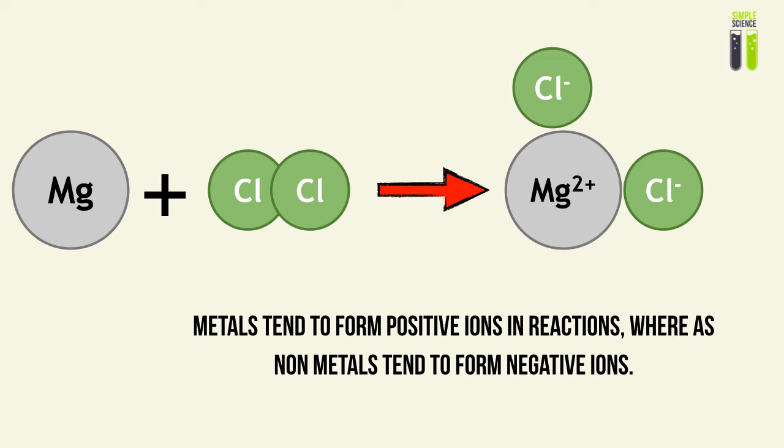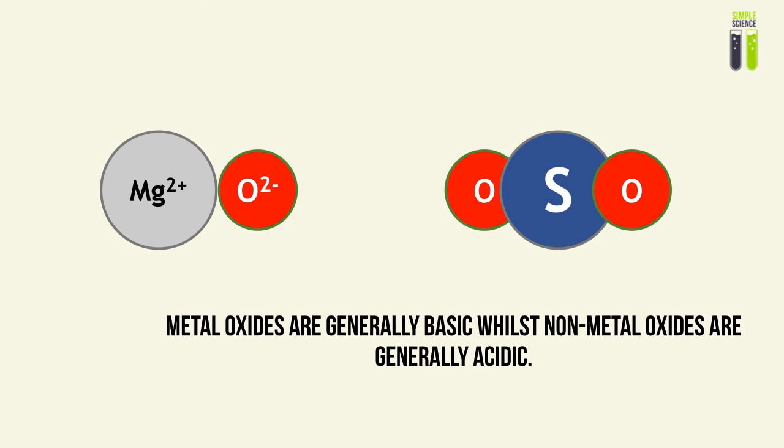Metals, when they take part in reactions, form positive ions, while non-metals generally form negative ions. The final point is that metal oxides are generally basic, whilst non-metal oxides are generally acidic. For example, magnesium oxide and sodium oxide are very basic oxides, whereas non-metal oxides like sulfur dioxide or nitrogen dioxide are generally acidic.